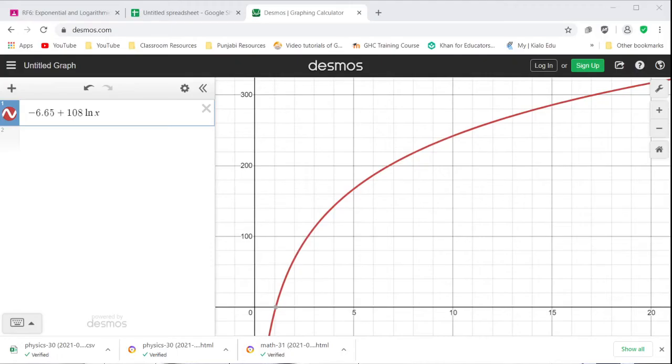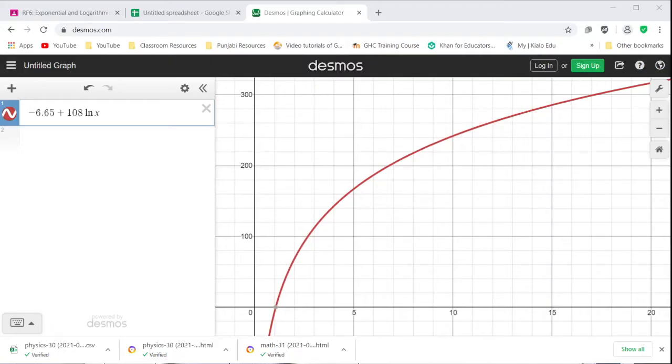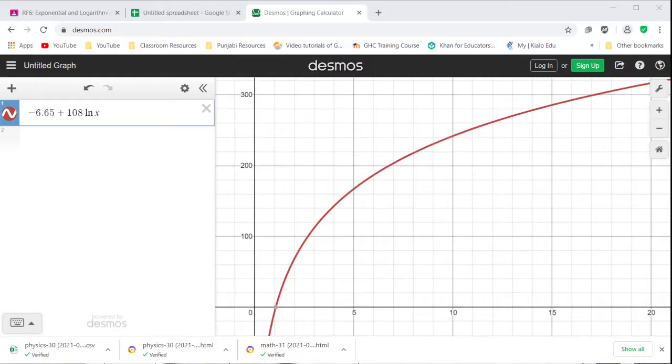The end behavior: as x goes to 0, it goes to negative infinity. As x goes to positive infinity, the y goes to positive infinity. The domain and range, again, x is strictly positive. Y is all real numbers. And whether the function is increasing or decreasing, it is increasing. So we have another logarithmic fit here. That's question 2.